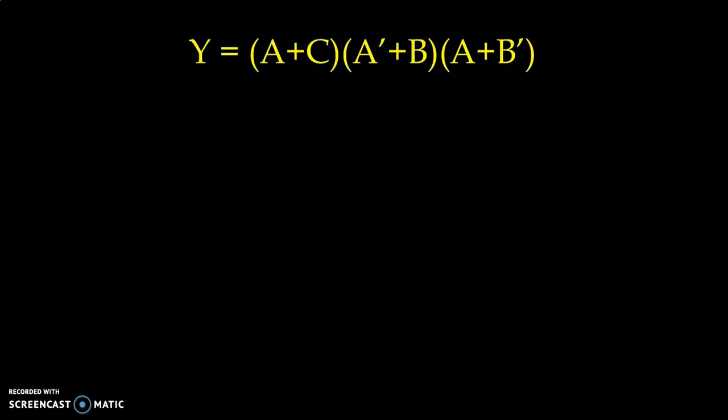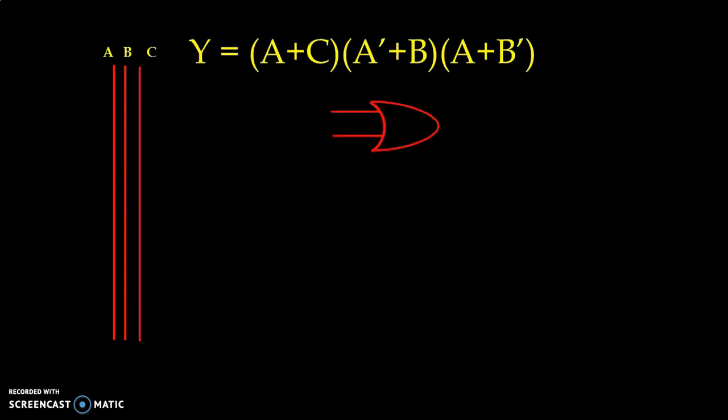We can see that we have three inputs. So we take input A, input B, and input C. For the first sum term, we use OR gate. We take input A as well as C input. And we have output of the OR gate. That is A plus C.